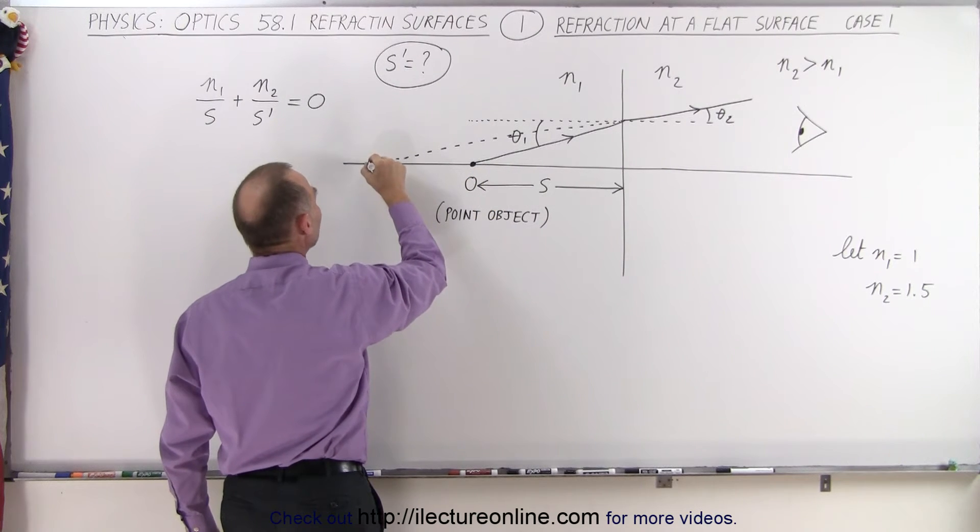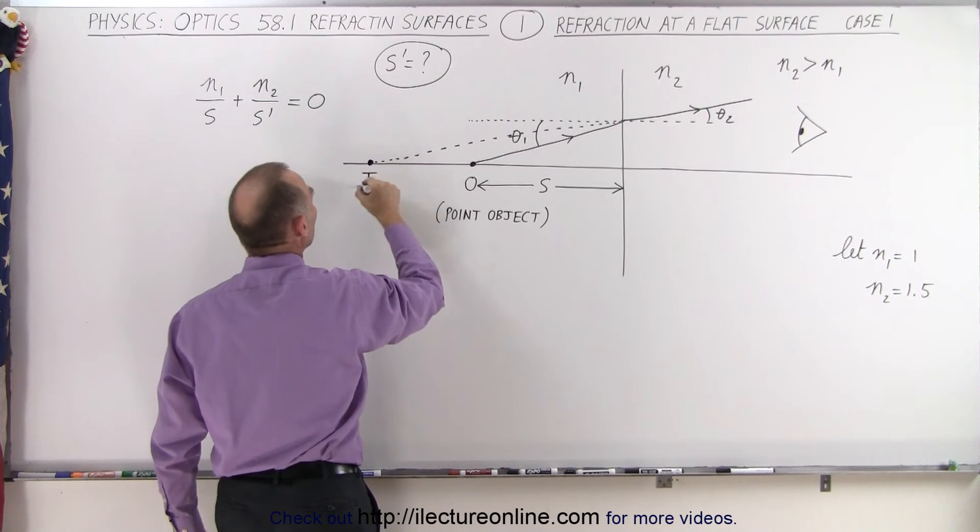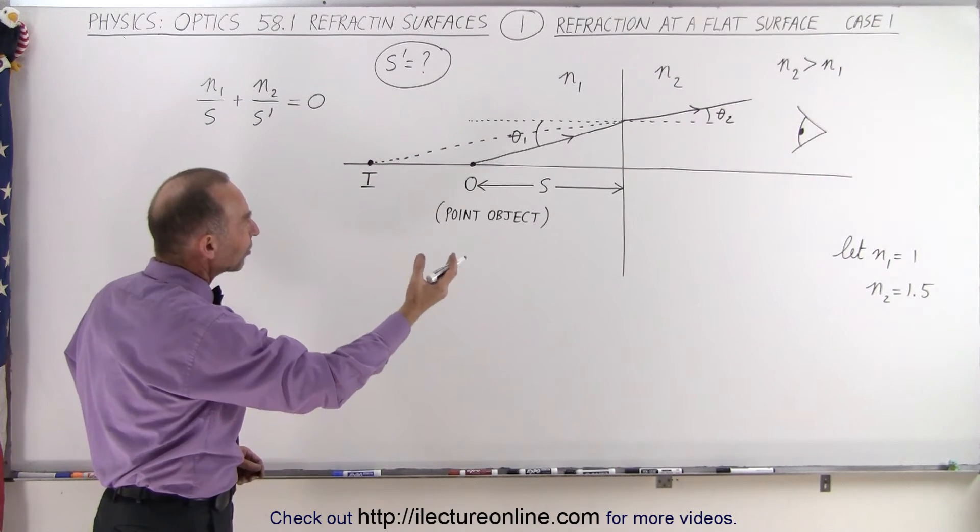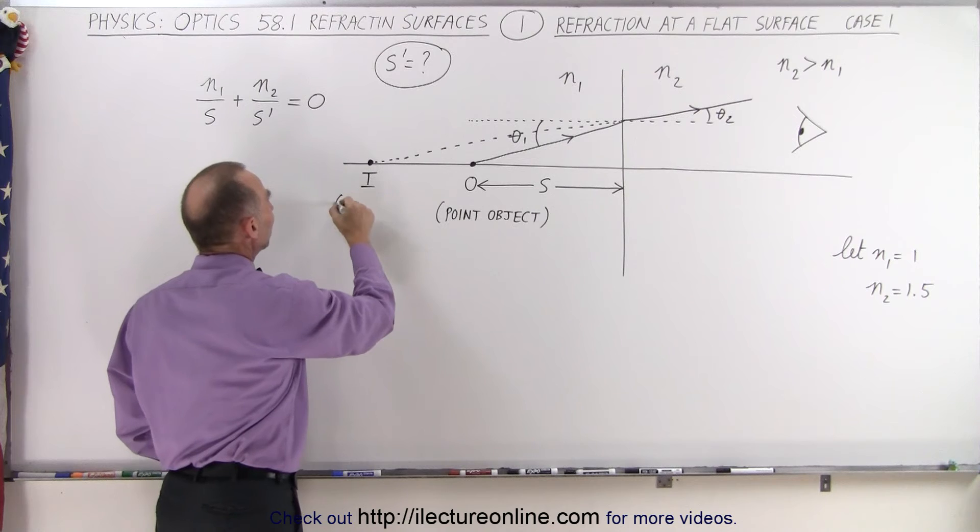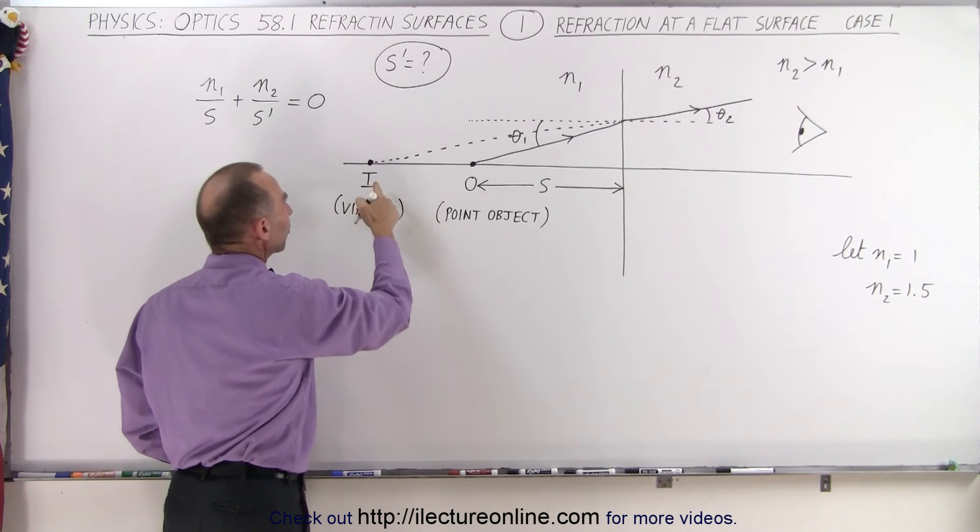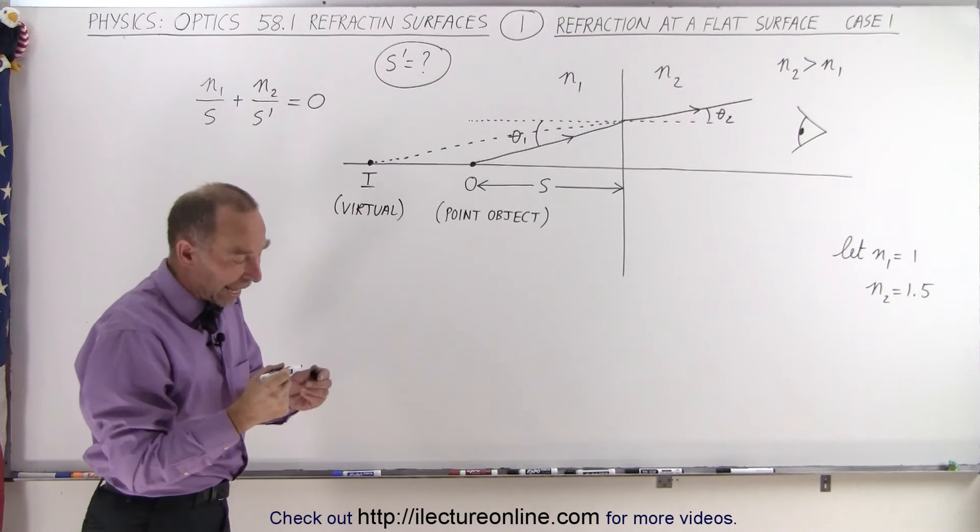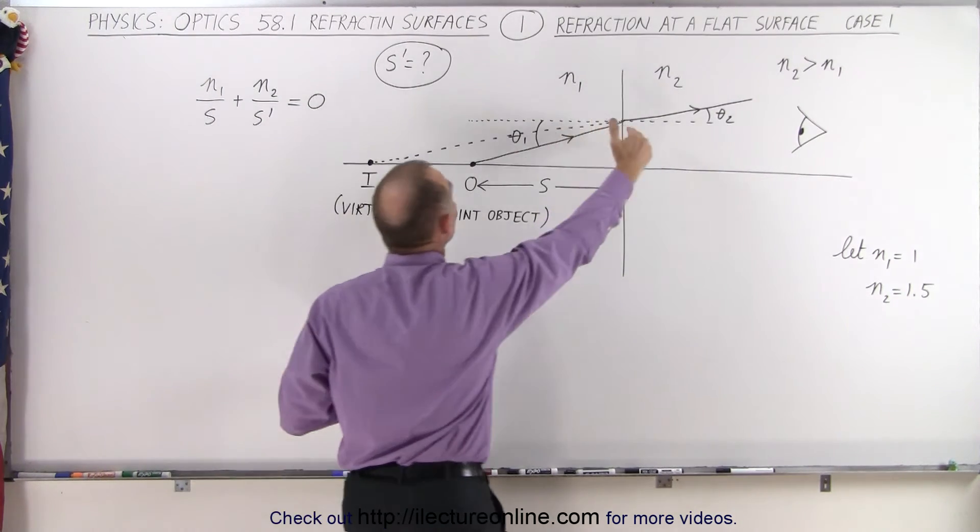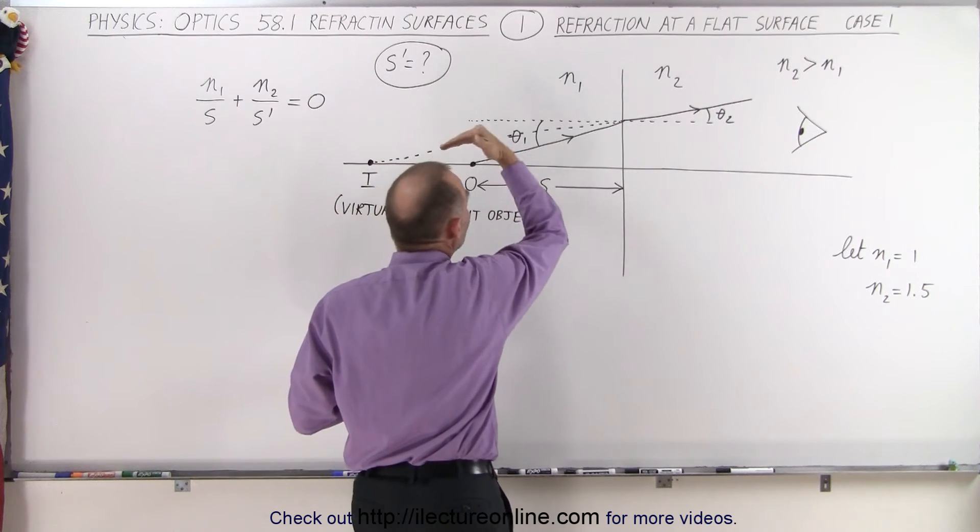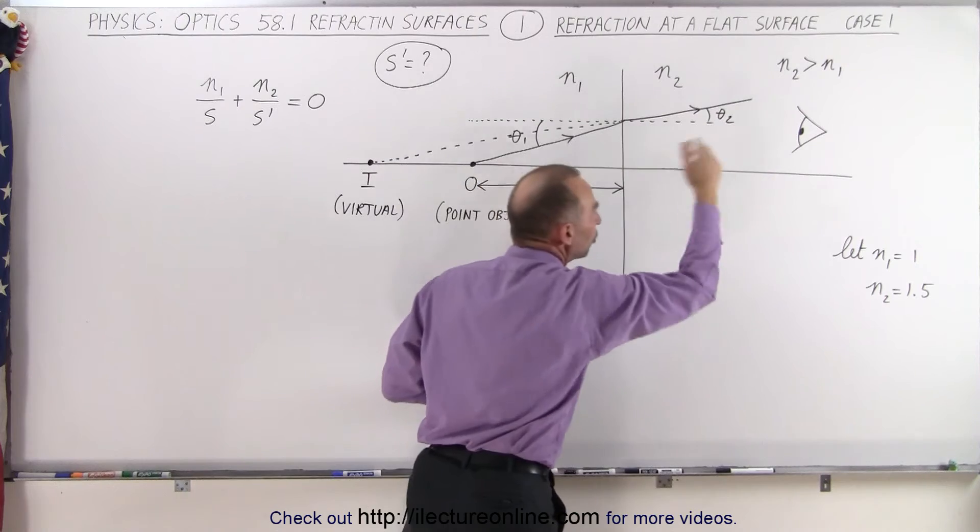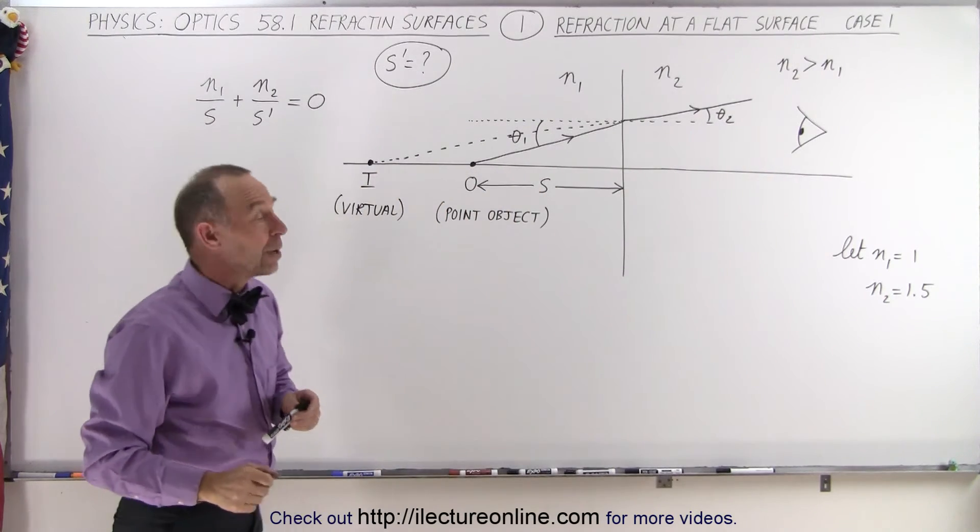And since the image is on the same side as the object, this will be therefore a virtual image, not a real image, because the ray doesn't actually come from there or doesn't actually go to the image. The ray appears to be coming from this position. It's not actually coming from the position, so therefore that becomes a virtual image to the observer.